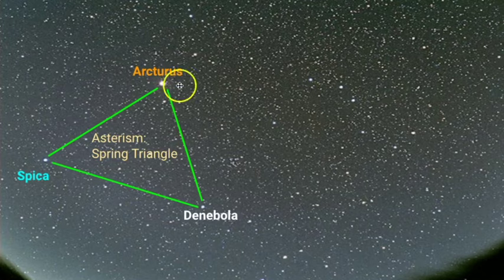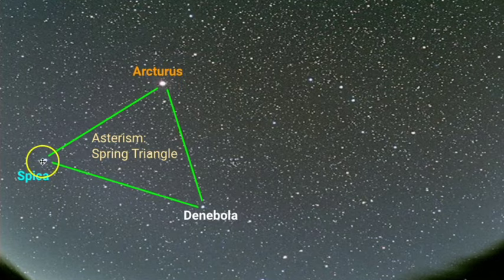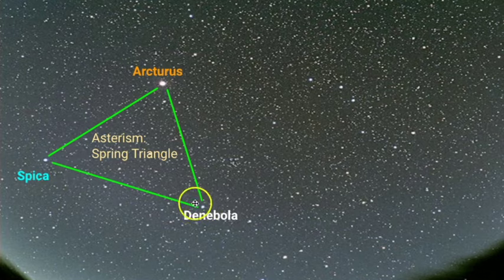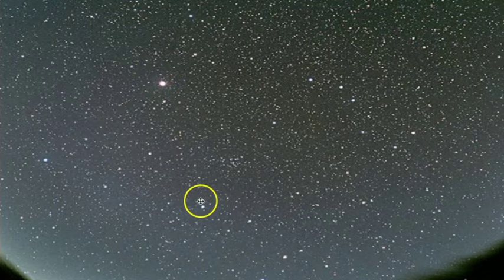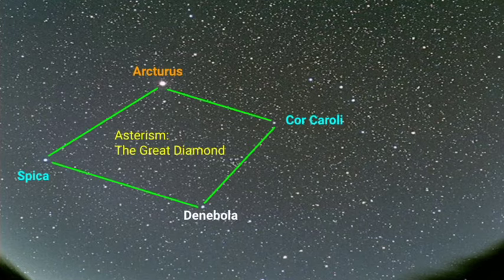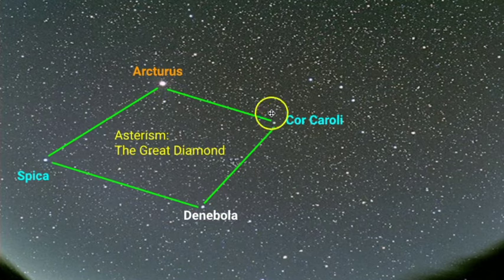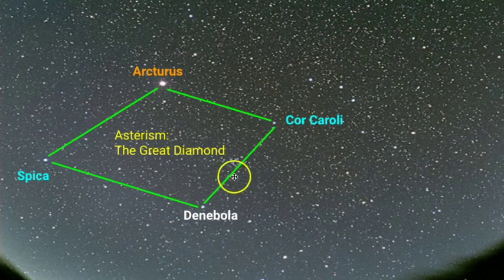The names of the Spring Triangle stars are Arcturus — remember we arc to Arcturus — and then we speed to Spica. Spica is in Virgo. Moving over, this is Denebola, which is one of the brighter stars within Leo the Lion. Another asterism you can see in the spring sky is called the Great Diamond. It's basically the Spring Triangle plus another star called Cor Caroli, which is part of Canes Venatici.